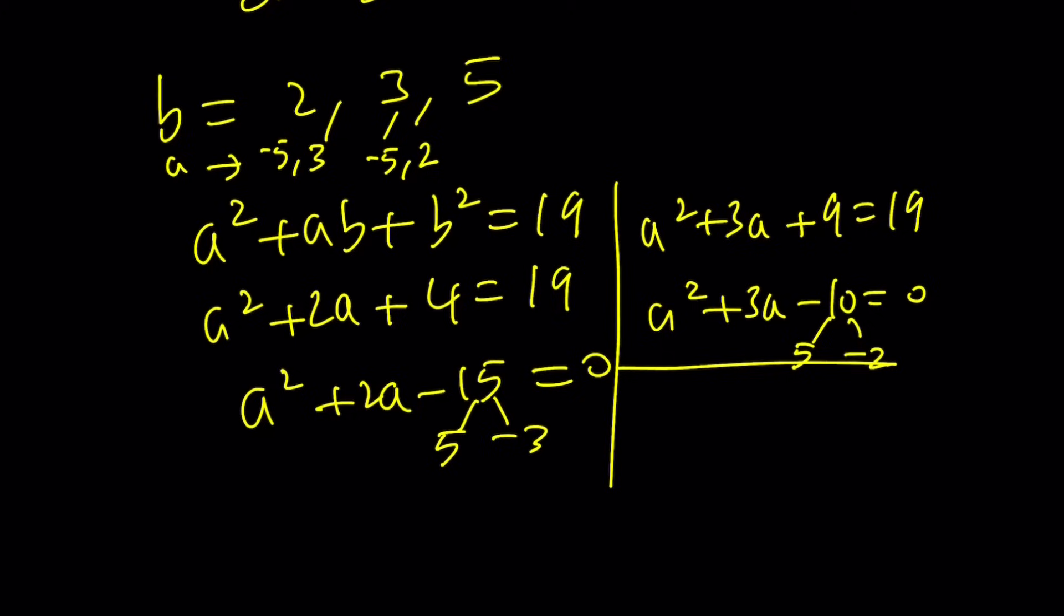And finally, if b is equal to 5, then you're going to get a squared plus 5a plus 25 is equal to 19. And this is a squared plus 5a minus 14 is equal to, wait a minute, that's not 14. That's a 6, right? Yeah. Subtract it the other way around. And then from here, we get what? To get a 5, you need 6 and negative 1. So negative 6 and positive 1. Negative 6 and positive 1 for a.